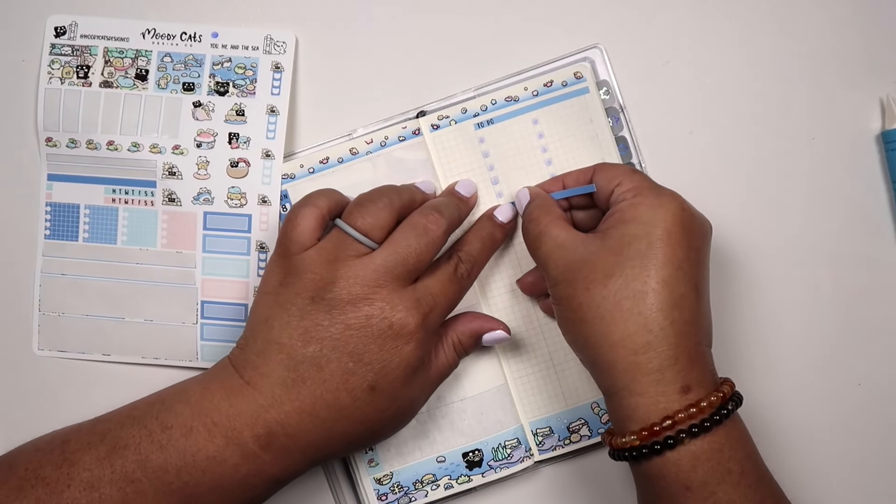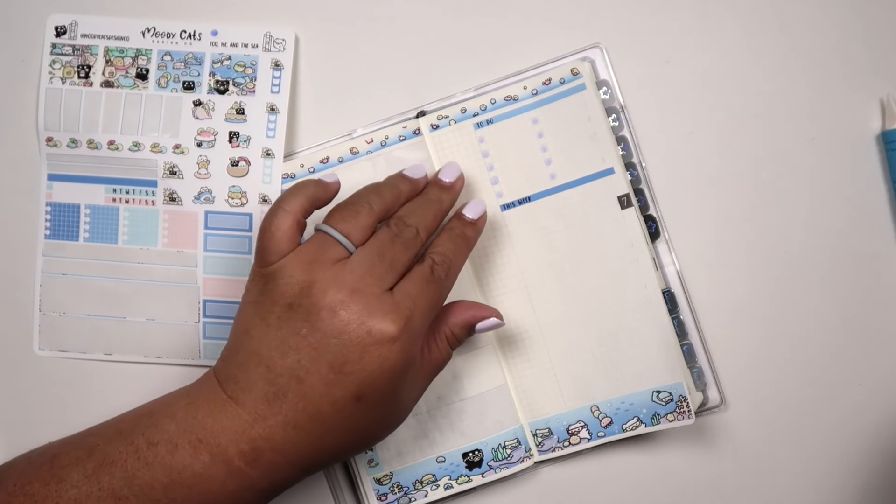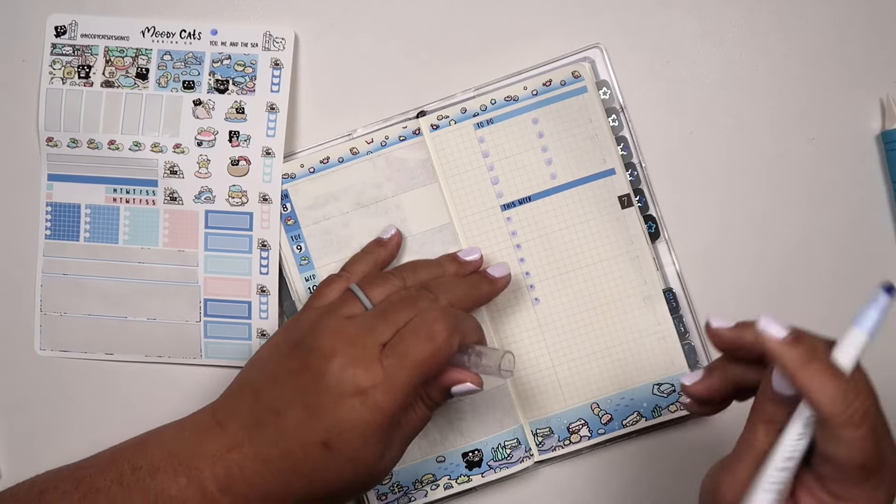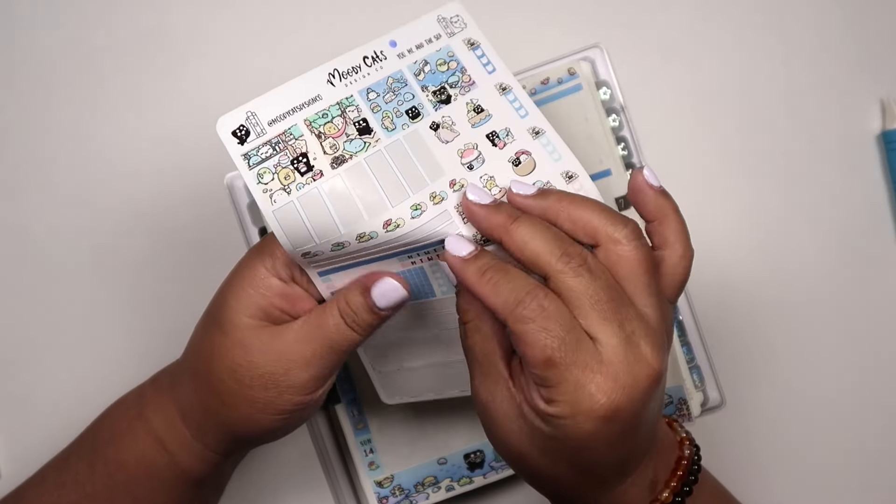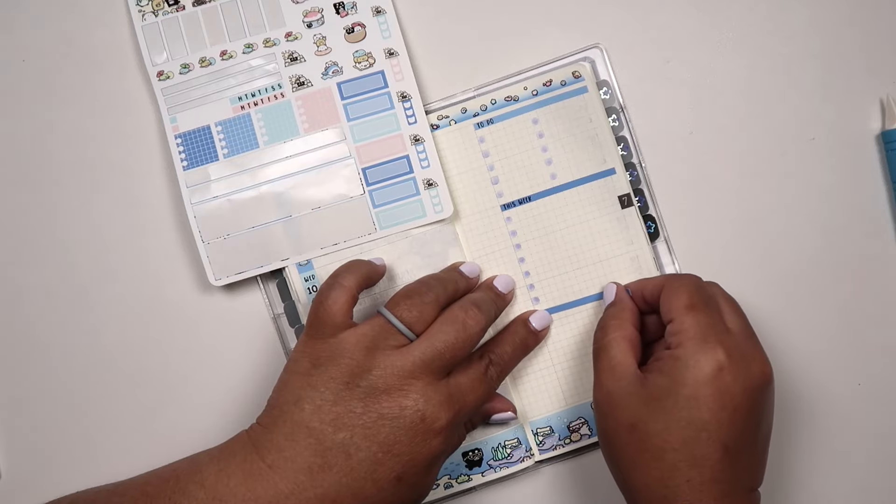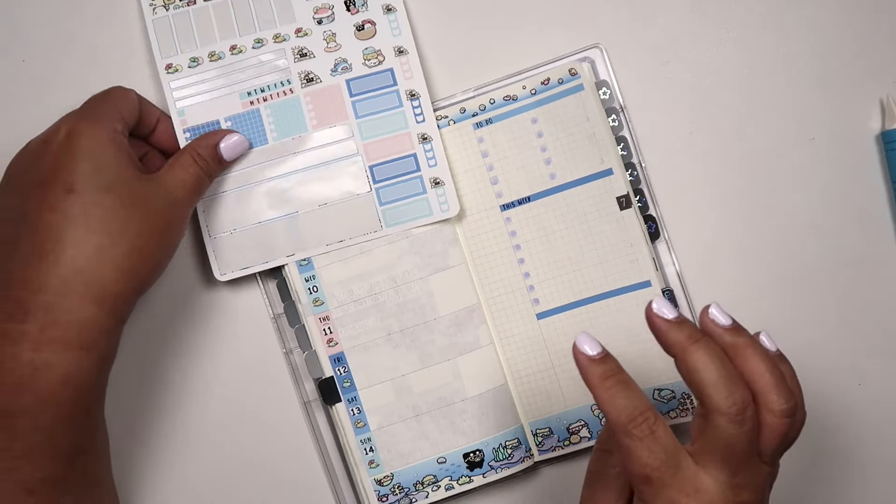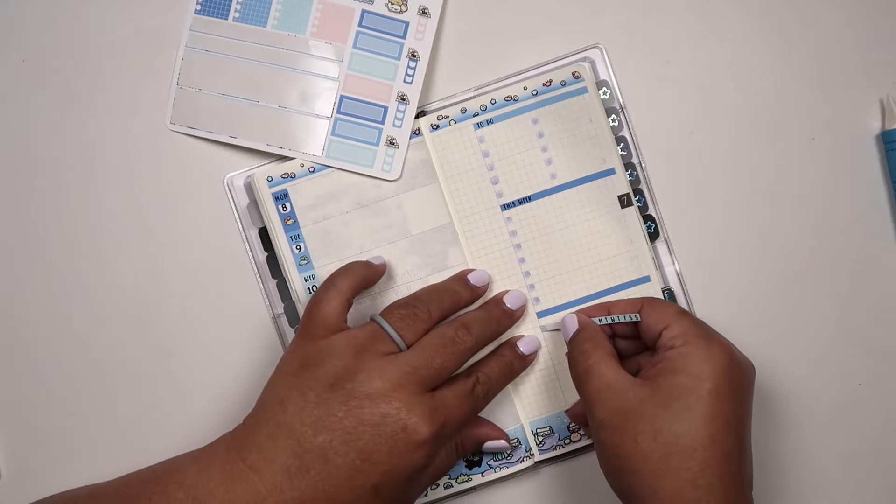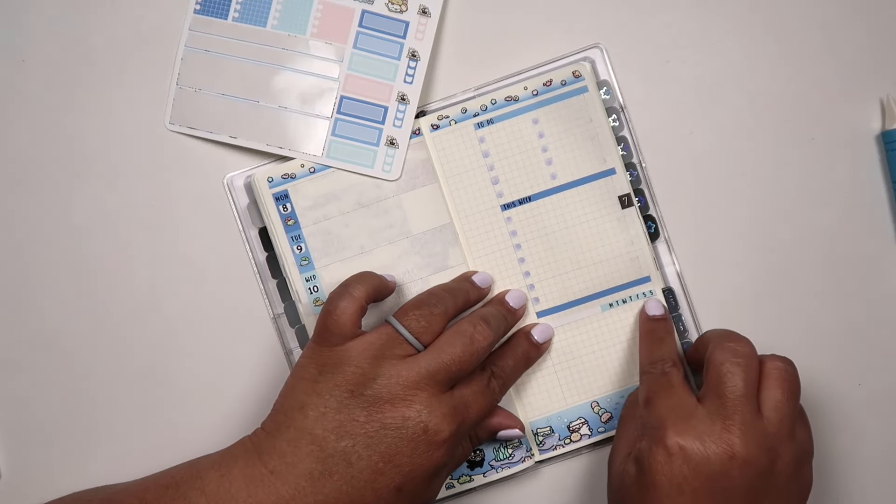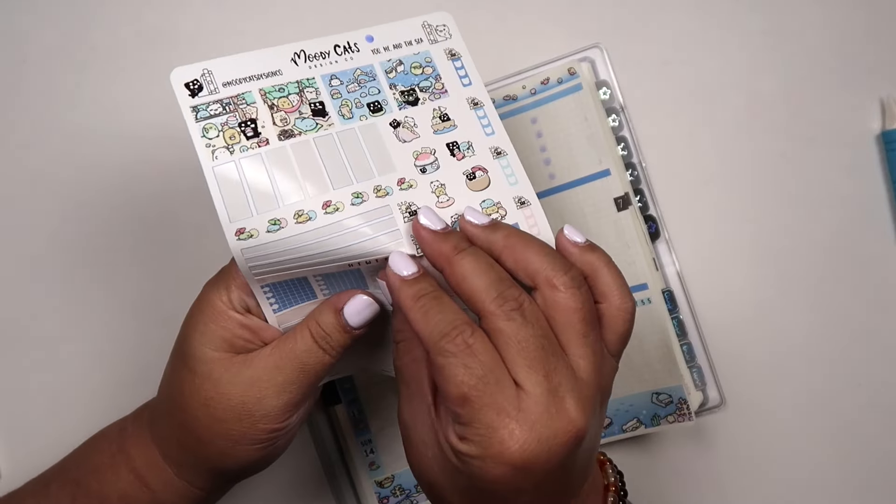But yeah, if you were to ask me, this is my number one choice for the company that makes a complete Hobonichi Weeks kit in one page. I really love the fact that they add top and bottom washi. I love having a top and bottom washi in a kit.